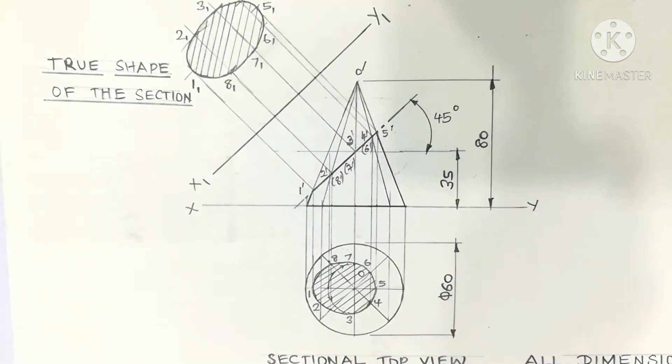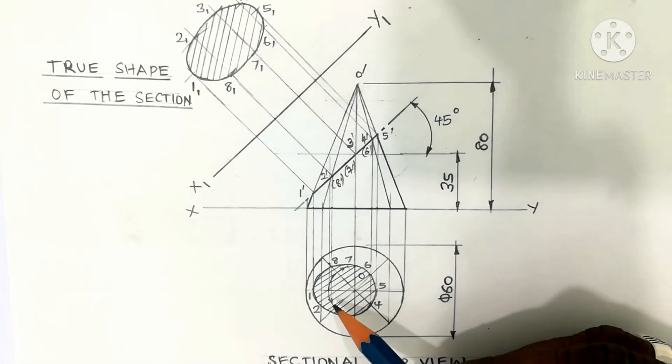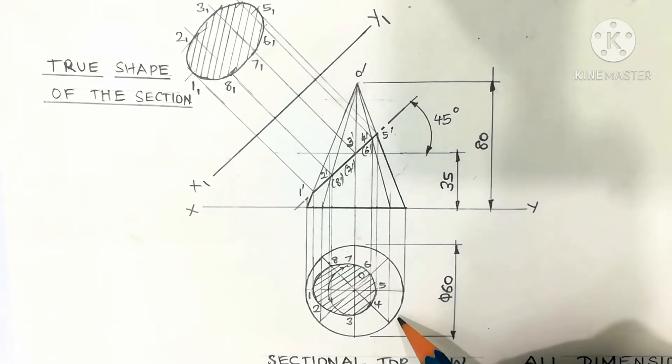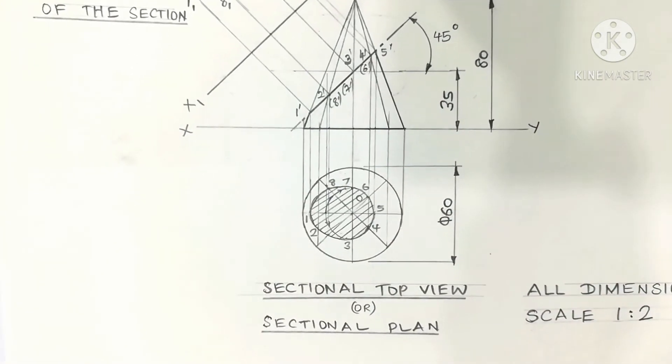This diagram is called the true sectional top view. The sectional top view is shown below the x-y line.